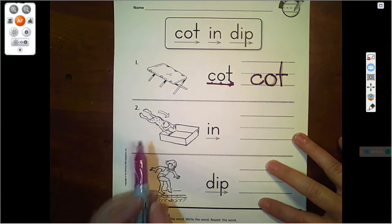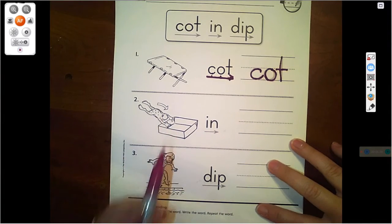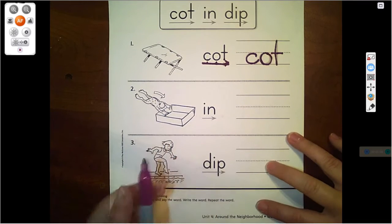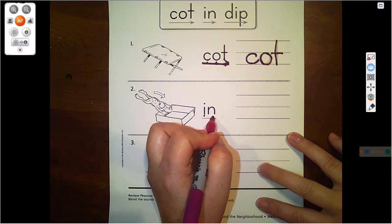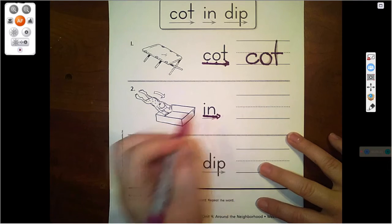Look at this next one. We see a frog and a box. I wonder what the word is. Let's see. I says I. N says N. In. In. The word is in.